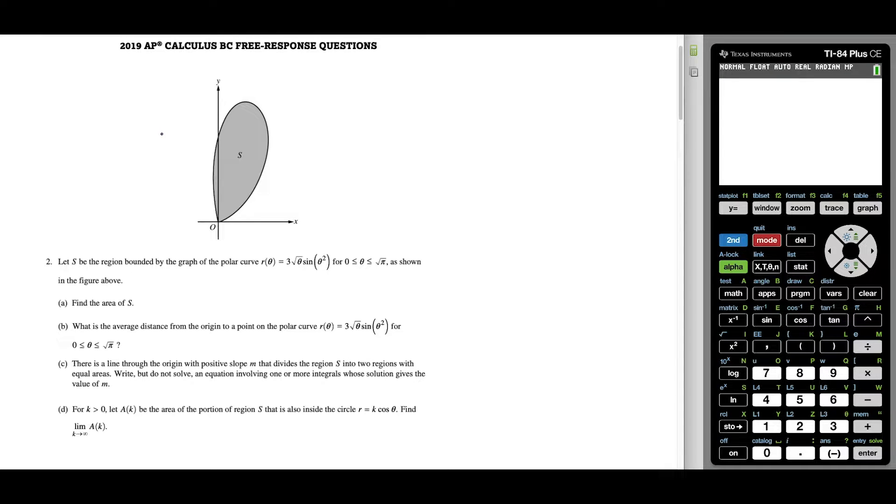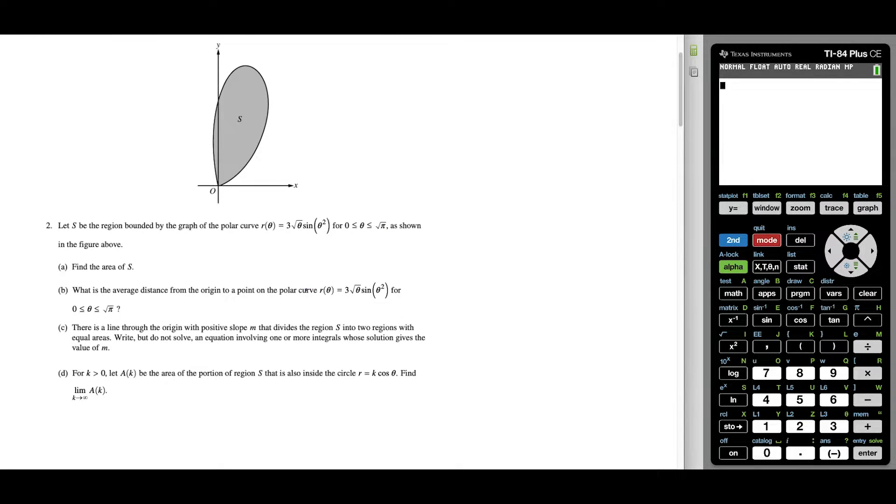What's up? I'm Vin and today I want to take a look at the 2019 AP Calc BC free response question number two. So we have this question here, the region S is bounded by this polar curve with the equation R of theta equals this expression here. And the limits are going from zero to square root pi. And the first thing we want to do for this question is find the area of region S.